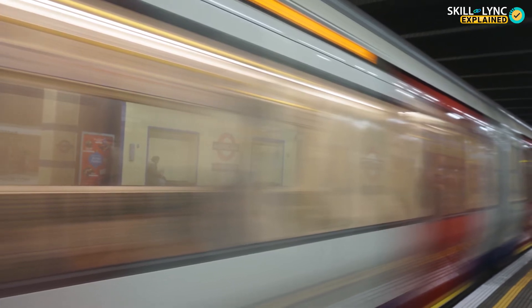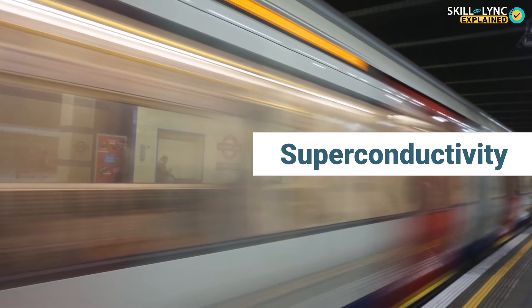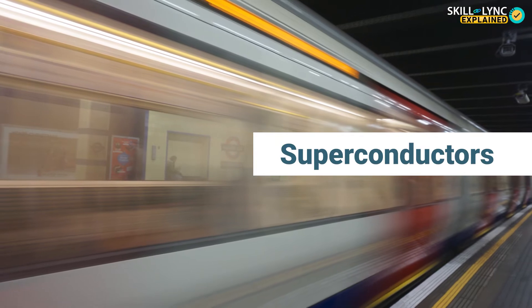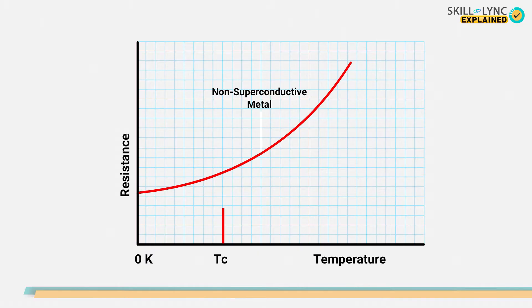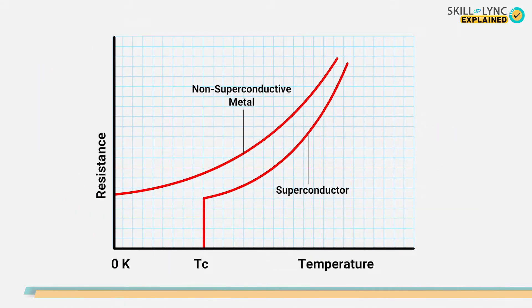This phenomenon by which materials possess zero electrical resistance at extreme cold conditions is known as superconductivity, and the elements that exhibit this property were called superconductors. The temperature at which a conductor turns into a superconductor is known as the critical or transition temperature, and this varies from conductor to conductor.